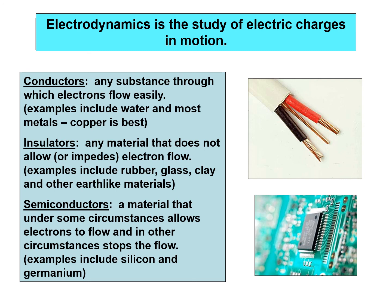Semiconductors are best discussed in the context of computers. A semiconductor allows electrons to flow or it doesn't, which is basically how a computer operates: through a circuit it allows voltage to flow or not. Computers operate on ones and zeros — either there's a flow of electricity through part of the circuit or there isn't. Conductors allow electrons to flow easily, insulators don't, and semiconductors can do either depending on conditions.